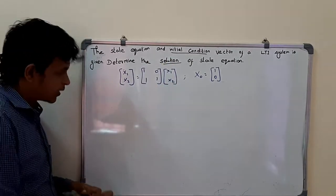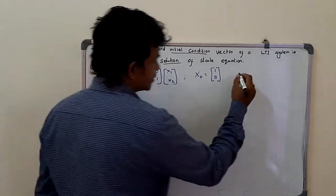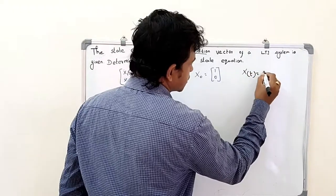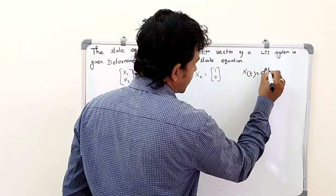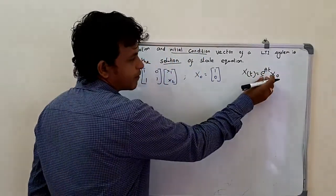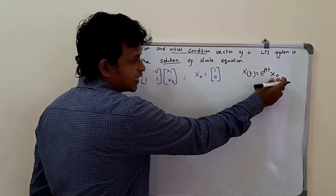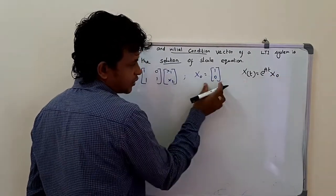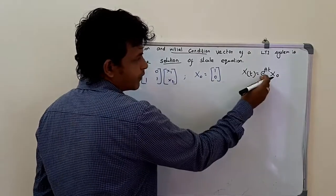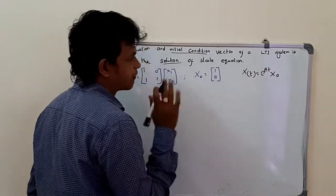The formula to find the solution of the state equation is x(t) = e^(At) · x₀, where e^(At) is the transition matrix and x₀ is the initial condition vector. We have x₀, but we do not have e^(At), so we need to find it.